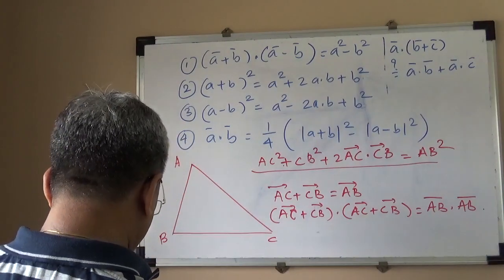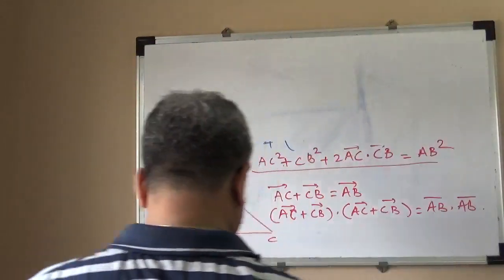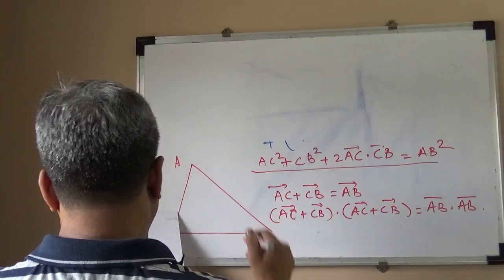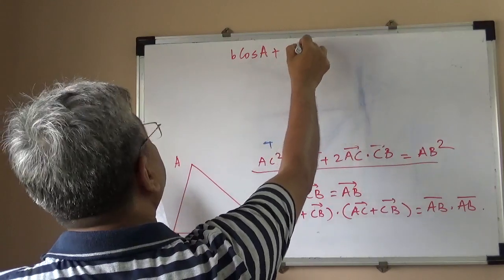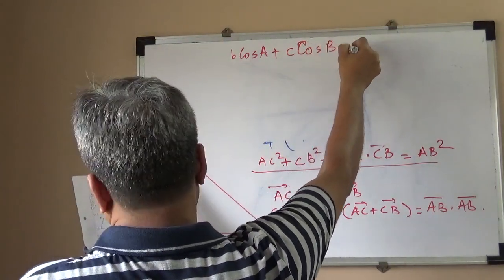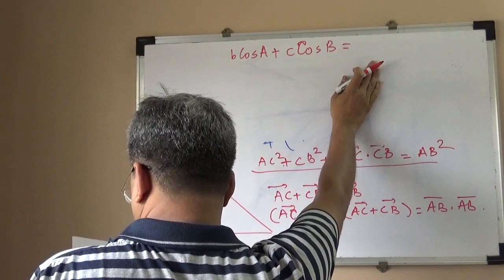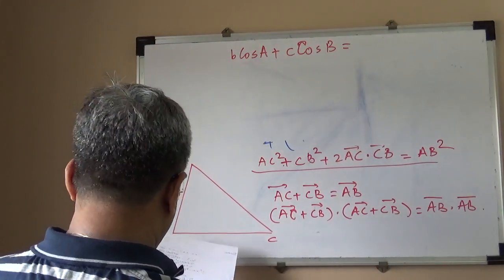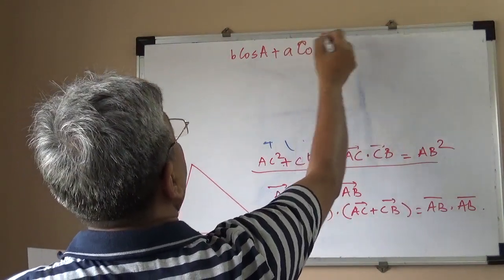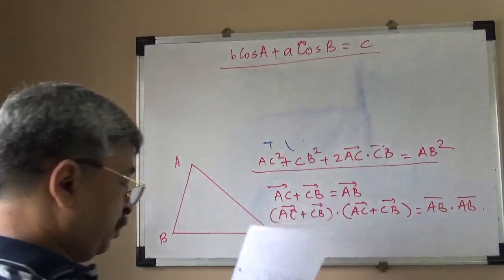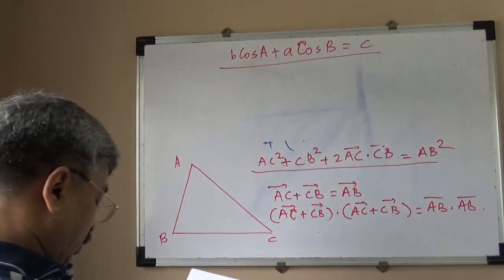Question 2: Prove the projection rule. In any triangle, B cos A + A cos B = C. You should be able to use the dot product to prove the projection rule as well.